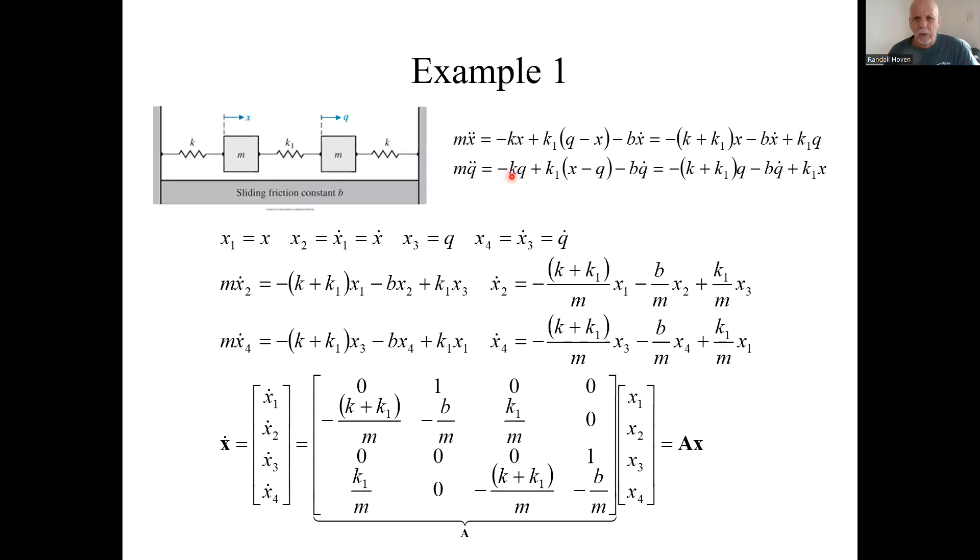Two bodies. Here's the two differential equations, one for each body. I can define my state space variables this way: it's the position and velocity of each of these two bodies. I won't go through all this, but now I have four state variables—position of each body and the velocity of each body.